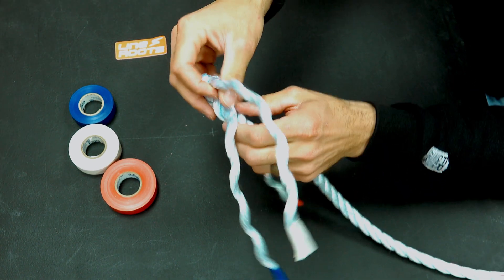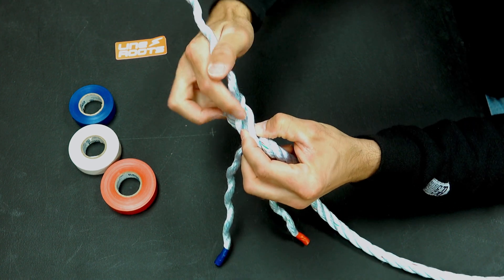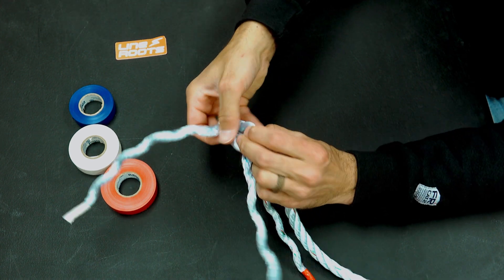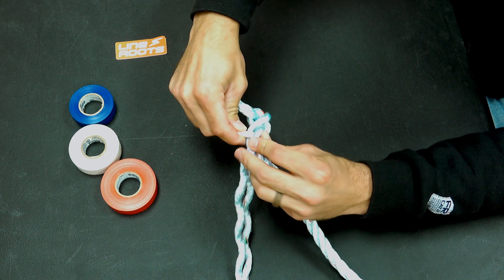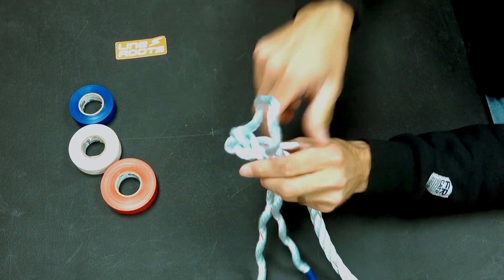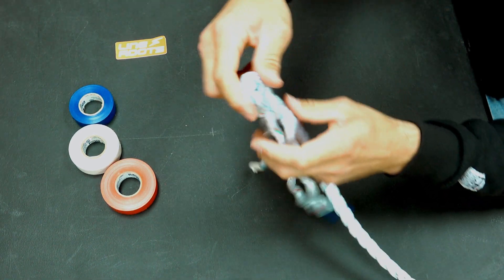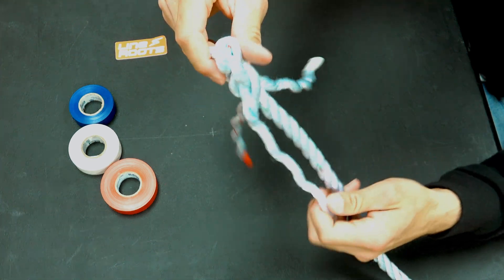Now I'm going to take my white. It's going to go up and over this strand and underneath of this one. It's going to look just like this.